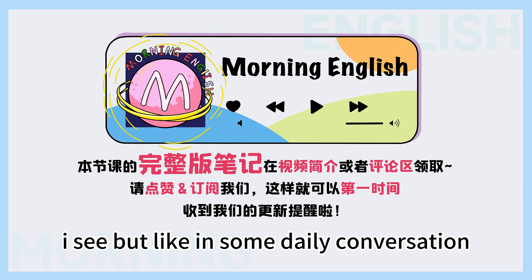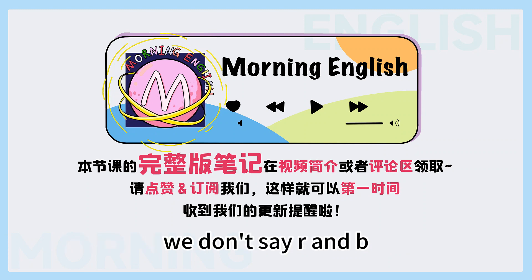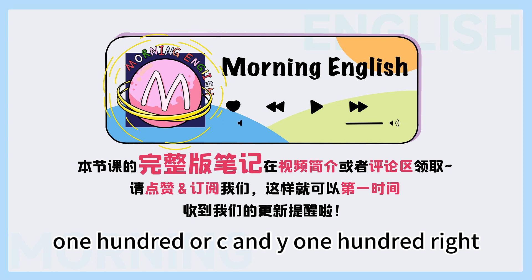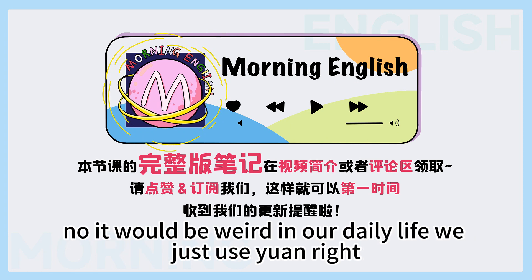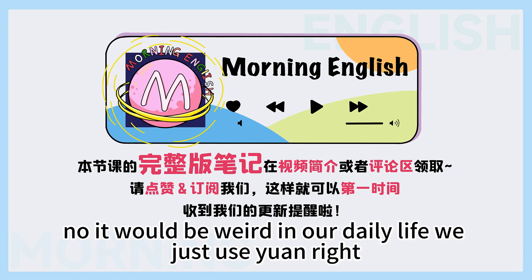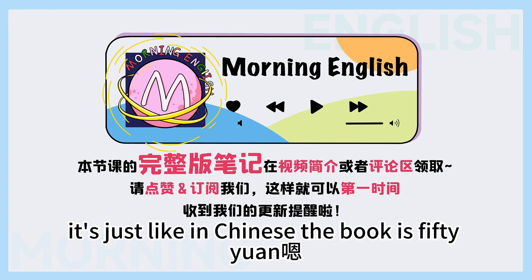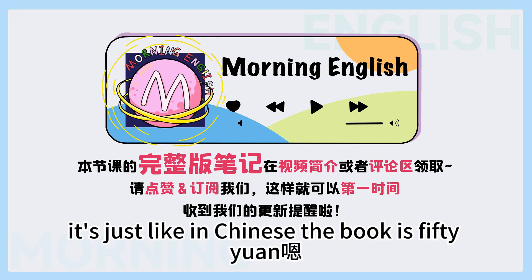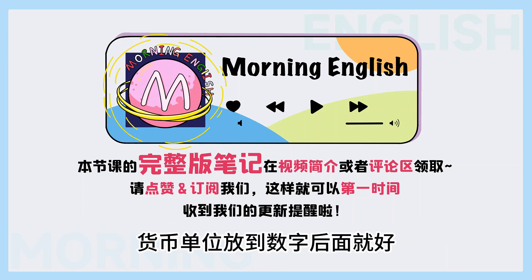But in some daily conversation, we don't say RMB100 or CNY100, right? No, it would be weird. In our daily life, we just use yuan, right? It's just like in Chinese — the book is 50 yuan. 貨幣單位放到數字後面就好，所以在中國是50 yuan.